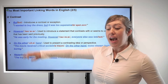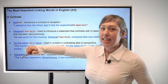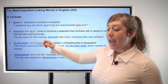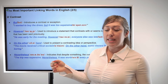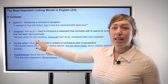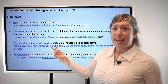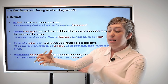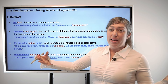Next we have 'however,' with emphasis on the second syllable, however. We use this to introduce a statement that contrasts with something we just said before. For example, he was early to the meeting. However, everyone else was late. So even though he was early, it didn't matter because in contrast, everyone else was late.